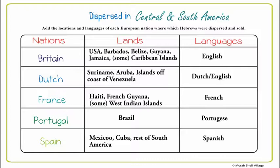Second, Dutch. We have Suriname, Aruba, and some islands off the coast of Venezuela, and of course they speak English and or Dutch.